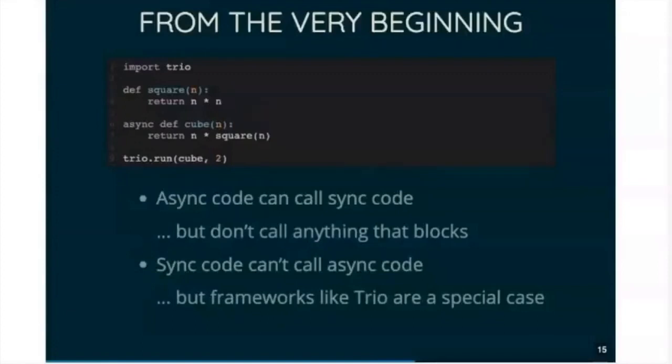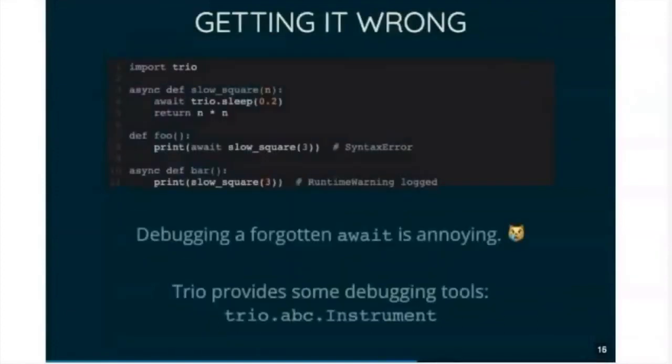So here are some ways you can get async code wrong. The first is to try and await something in a sync function, and that you'll know immediately because the compiler gives you a syntax error. You're not going to miss that in your code.